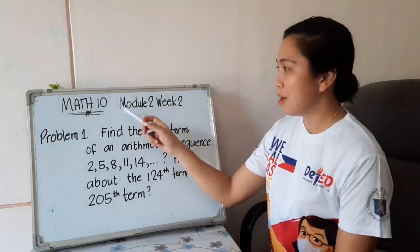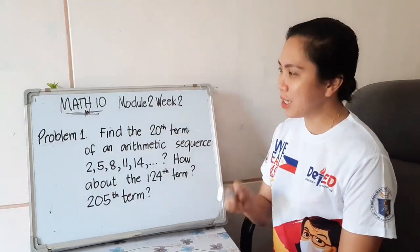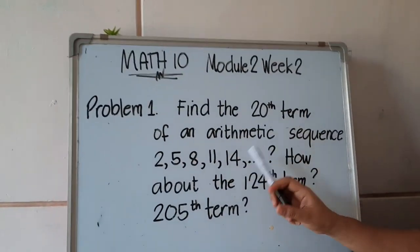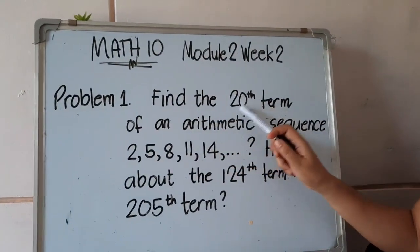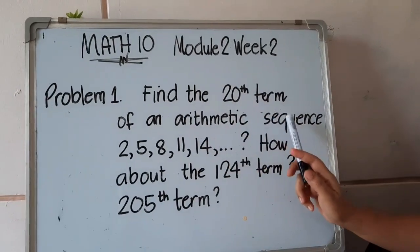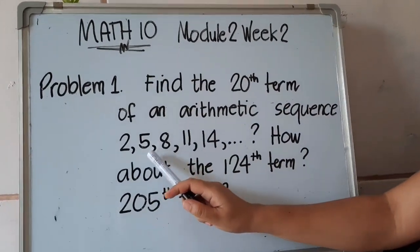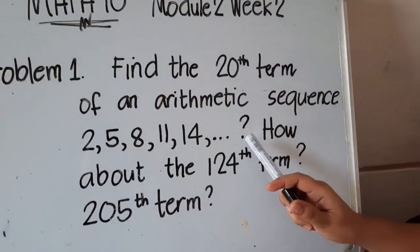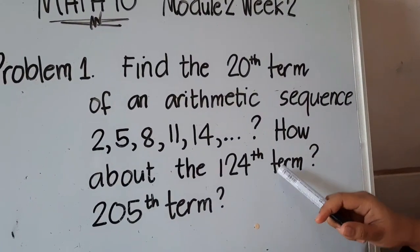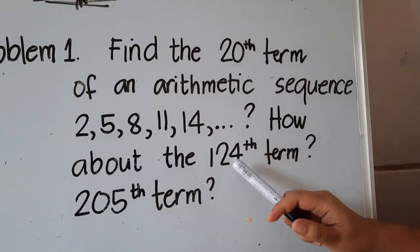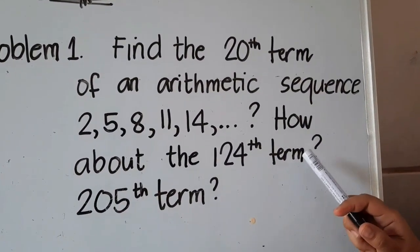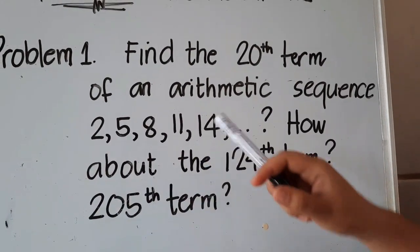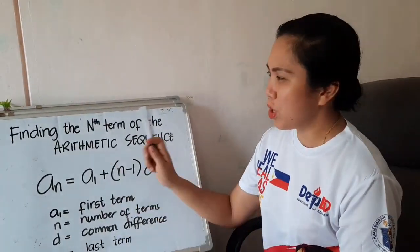For example, how are we going to solve this kind of problem: find the 20th term of an arithmetic sequence 2, 5, 8, 11, 14, and so on. How about finding the 124th term or the 205th term?